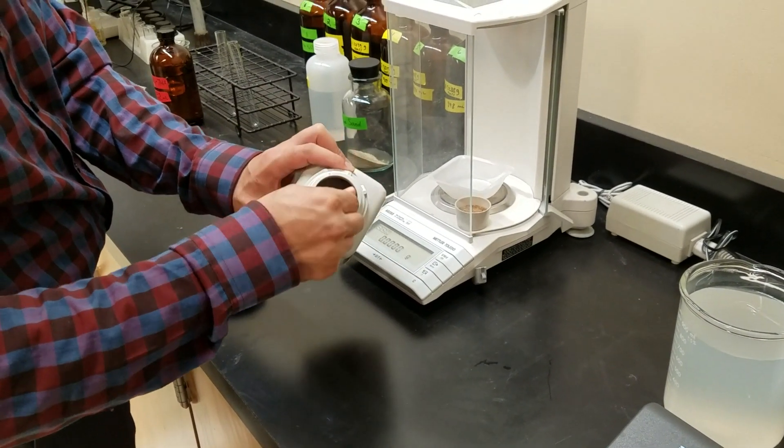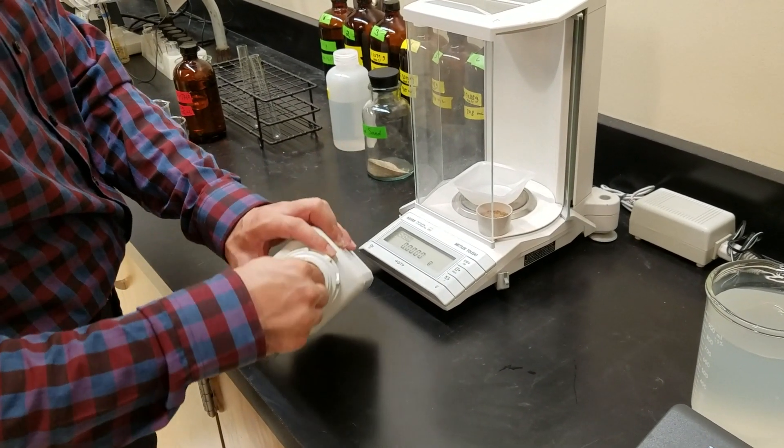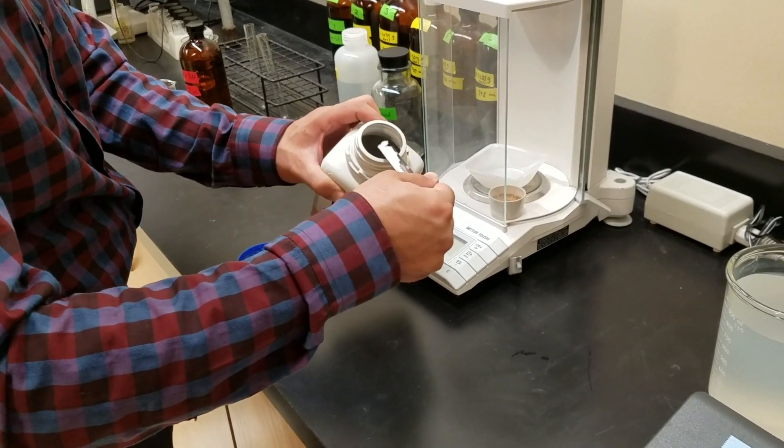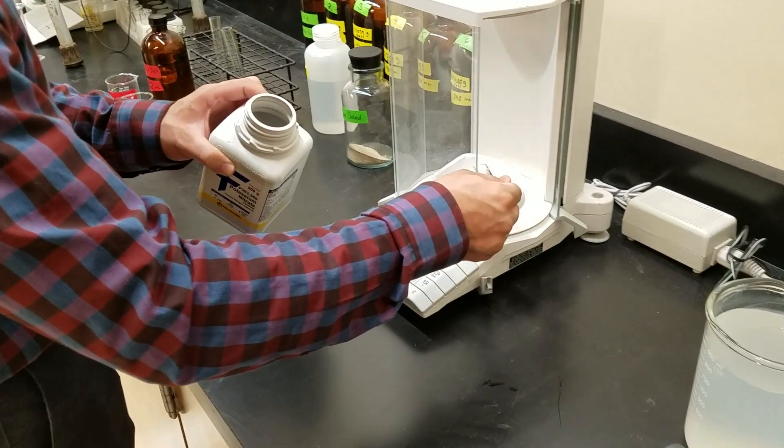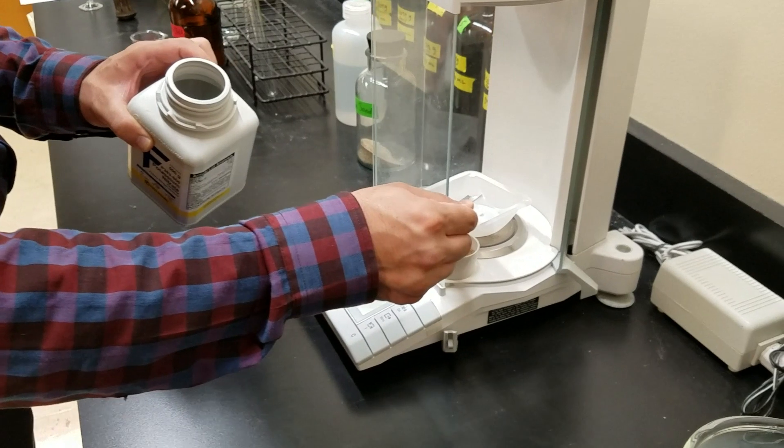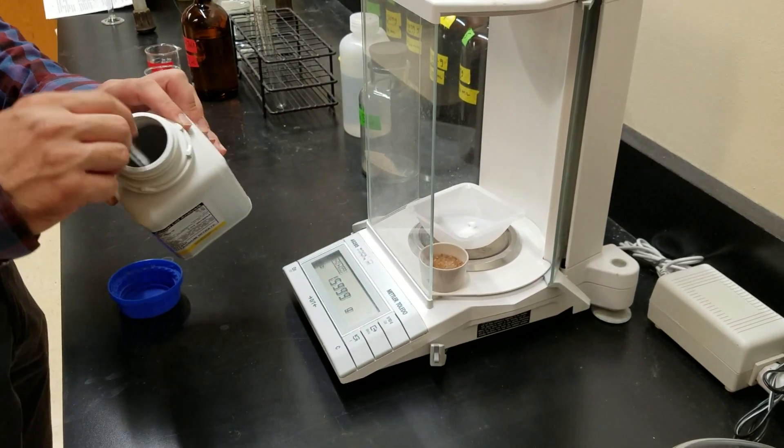To begin with we measure out some potassium nitrate on an analytical balance and of course we'll write this in our notebooks. The lab will suggest what weight of potassium nitrate to use.